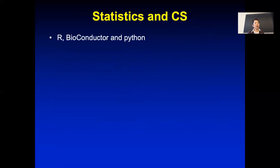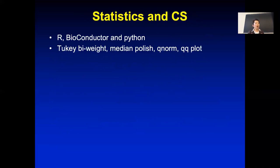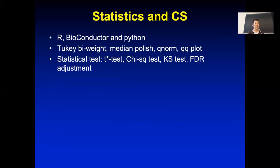So why is this course offered as a statistics course? We learned R, Bioconductor, and Python programming. We learned median polish for RMA, quantile normalization, looking at whether data is normally distributed using QQ plots. We looked at t-tests and modified t-tests, chi-square tests for two-by-two tables, Kolmogorov–Smirnov tests for gene set enrichment analysis, and CRISPR screens. Also very important: multiple hypothesis testing adjustment — false discovery rate adjustment is always useful.